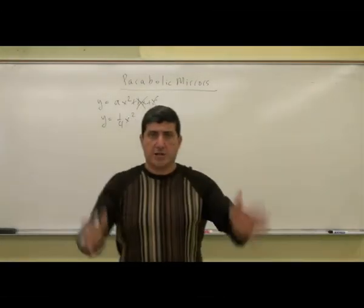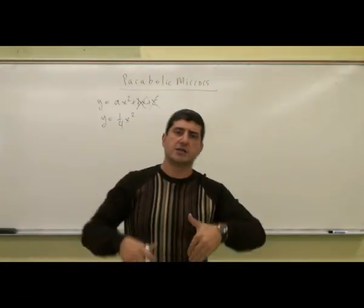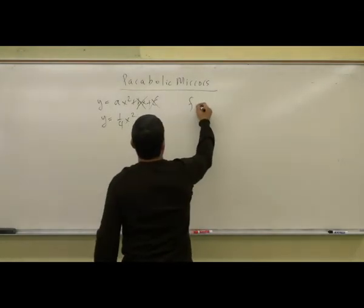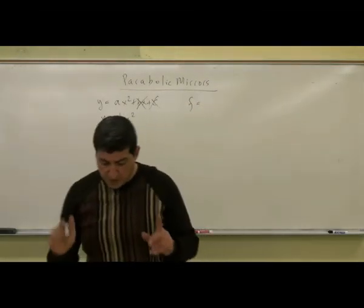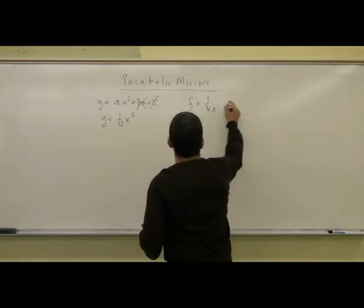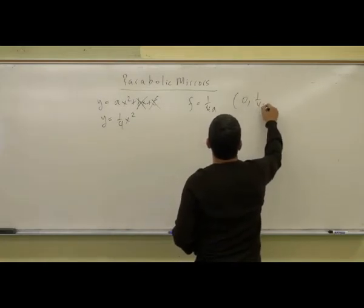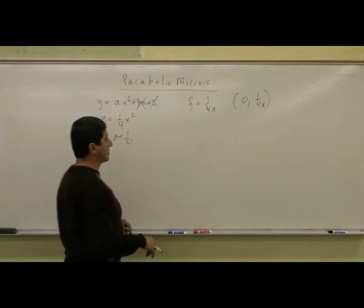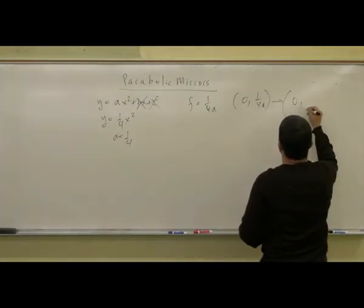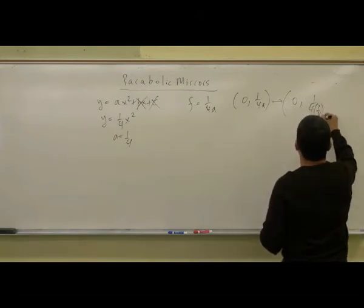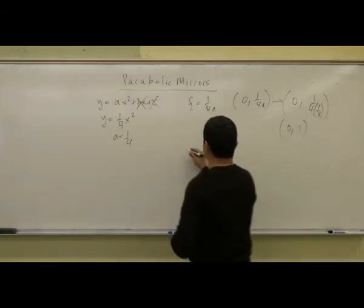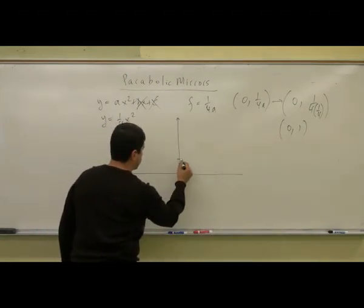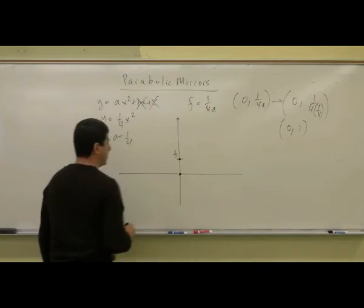If we can show that all parallel light rays hitting this parabola go through the focal point, we can generalize to any parabola. In math, we learned that the focal point of a parabola centered at the origin is at (0, 1/(4a)). The value of a I've chosen is 1/4, so the focal point is at 1 over (4 × 1/4), which is (0, 1). So the parabola starts at the origin and the focal point F is at (0, 1).